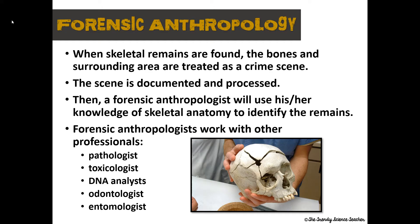When skeletal remains are found, the bones and surrounding area are treated like a crime scene. The scene is secured and searched to locate all of the bones. If the bones are scattered, then any other evidence that might arise at the crime scene will be packaged according to chain of custody. The scene is documented and processed, and then a forensic anthropologist is called in to use their knowledge of skeletal anatomy to help identify those remains.